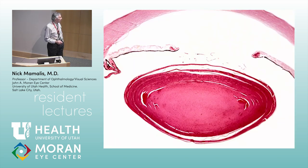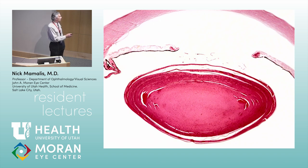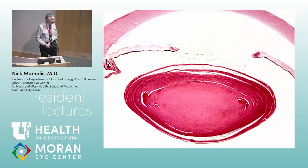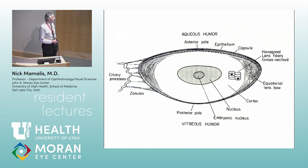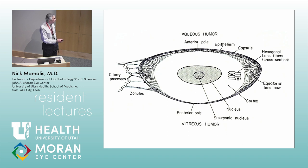Here it is in a pathologic section. It's really hard to tell by the time you get to an adult, but there really is a compacted embryologic nucleus in here. You've got a fetal nucleus, you've got an adult nucleus, then around that you've got cortex, and around that you've got capsule. In the schematic view: embryonic nucleus, the fetal nucleus, the adult nucleus, surrounded by cortex, and then surrounded by lens capsule.